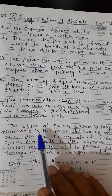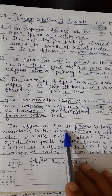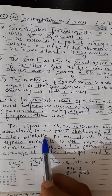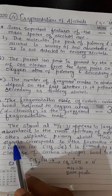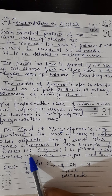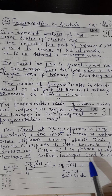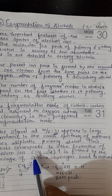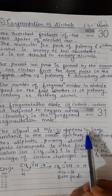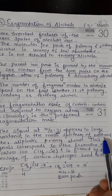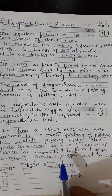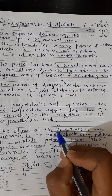The next point: a signal at m/z = 31 appears in large abundance in the mass spectrum of methanol and other aliphatic primary alcohols. This signal corresponds to the formation of the oxonium ion and is formed by the cleavage of the carbon-hydrogen bond in methanol.